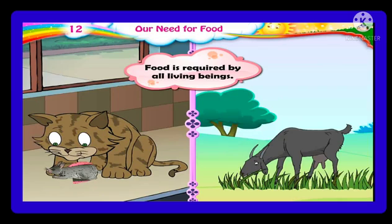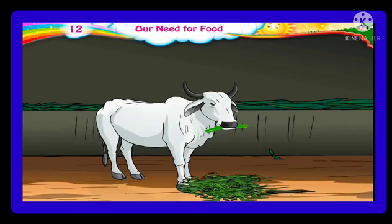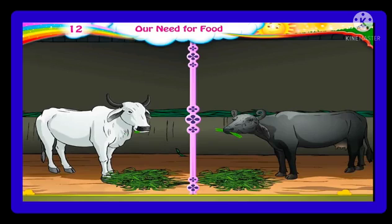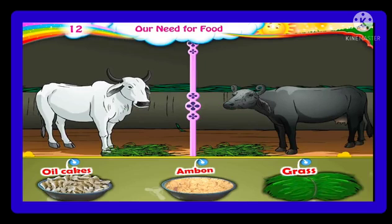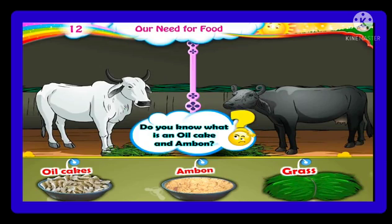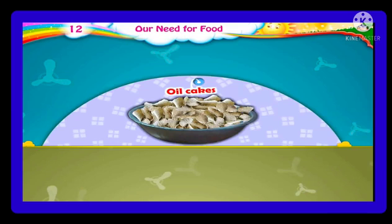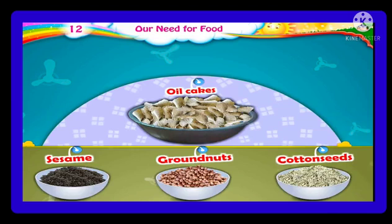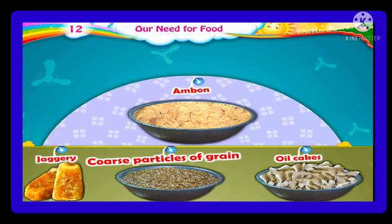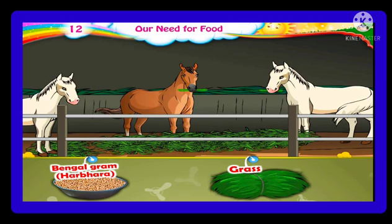Students, the material that is left after extracting oil from seeds — such as oil cakes, amban, and grass — is used as animal feed. Oil cake means groundnut, sesame, or cottonseed pressed into slabs. Amban is a fermented mixture of oil cake, jaggery, and coarse particles of grain mixed in water, used as animal feed.